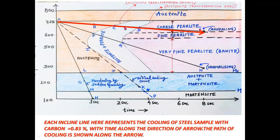Between points C and D, the microstructure is a mixture of austenite and pearlite — the transformation is taking place. At point D, the complete transformation of austenite to pearlite is completed. Moving further along the arrow, we enter into the pearlite region shown by the red color region, and the arrow ends at point E, which lies in the coarse pearlite region. So the final microstructure will be coarse pearlite, and this process is called annealing.